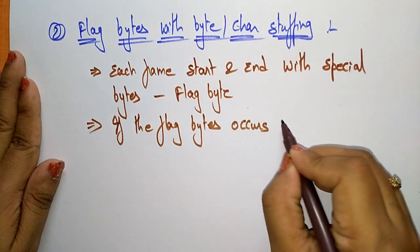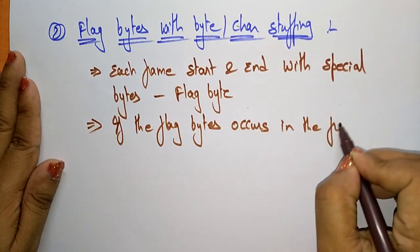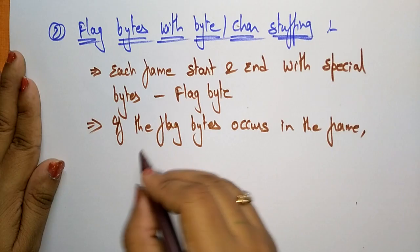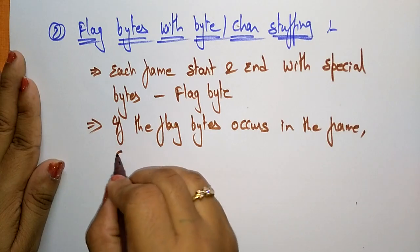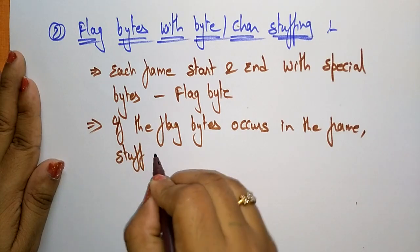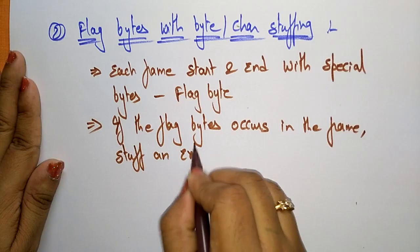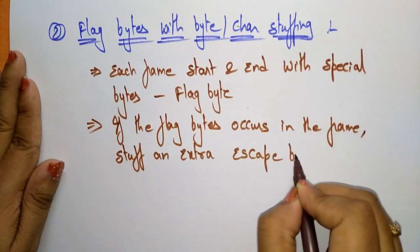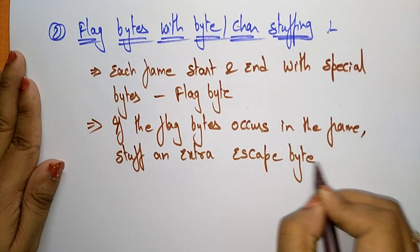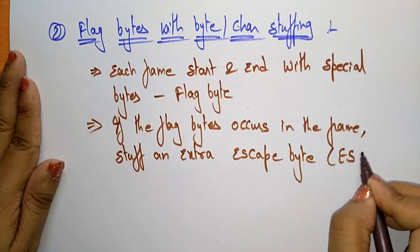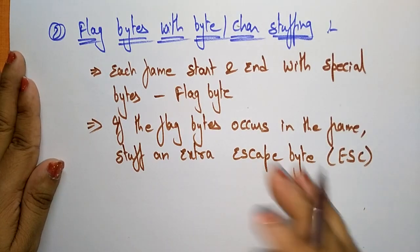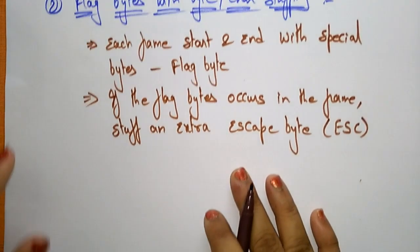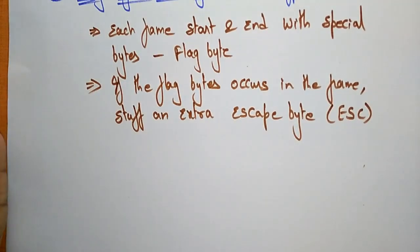If the flag byte already occurs inside the frame — suppose the frame already contains a flag byte — then you have to stuff, meaning include, an extra escape byte. You have to stuff an ESC byte. This method is mainly used in Point-to-Point Protocol.